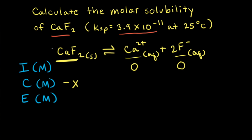Looking at the mole ratios, it's a 1-to-1 mole ratio between calcium fluoride and calcium 2+ ions. So for losing X for the concentration of calcium fluoride, we must be gaining X for the concentration of calcium 2+ ions. And since it's a 1-to-2 mole ratio for calcium 2+ ions to fluoride anions, if we're gaining plus X for calcium 2+, we must gain plus 2X for fluoride anions.